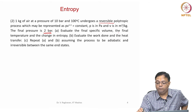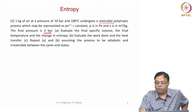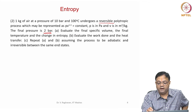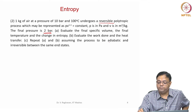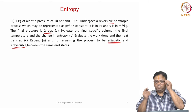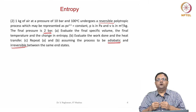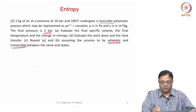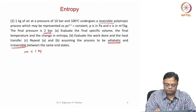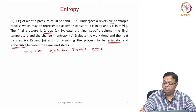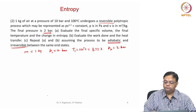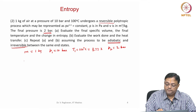Please understand this is a reversible process where PV^1.1 is constant. P is pressure, V is specific volume in cubic meters per kg. The final pressure is 2 bar. Evaluate the final specific volume, final temperature, and change in entropy. Then evaluate the work done and heat transfer. Part C repeats A and B assuming the process to be adiabatic but irreversible. Mass is 1 kg, P1 is 10 bar, T1 equals 373 Kelvin, and P2 equals 2 bar.